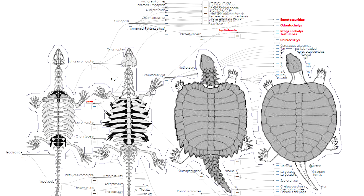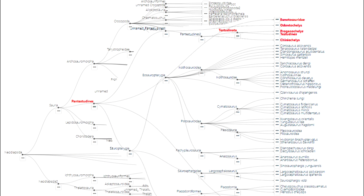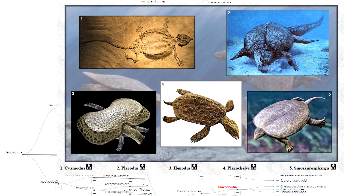They also lost their teeth at this point and really looked like turtles, but they weren't quite there yet. Finally, Chinlechelys fused the carapace onto the ribs and made a complete shell by joining it with the plastron too — thus began the true lineage of turtles. At about that same time, another group called Placodonts did something similar, also developing shells and osteoderm scutes, and they weren't the only ones trying to turtle.